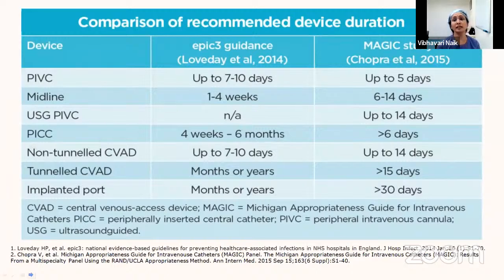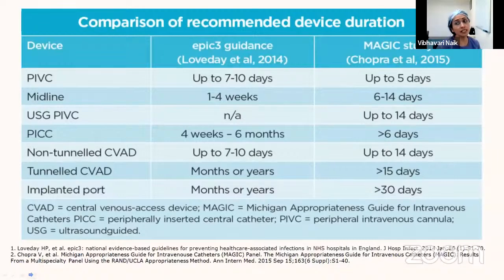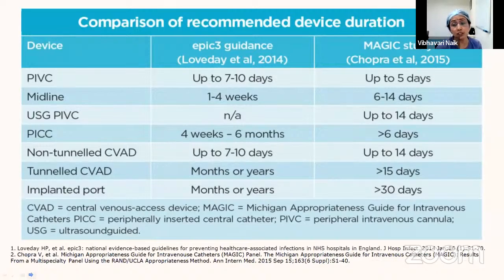There is some discrepancy between guidelines on device duration. The EPIC-3 guidance from 2014 (NHS/UK) is more liberal on peripheral IV catheters and midline catheters, with longer recommended durations. The MAGIC group — Michigan Appropriateness Guide for Intravenous Catheters, a US-based group — prefers longer-term vascular access earlier: a PICC line for anyone needing venous access more than six days, and a tunneled central line for anyone requiring it more than two weeks.